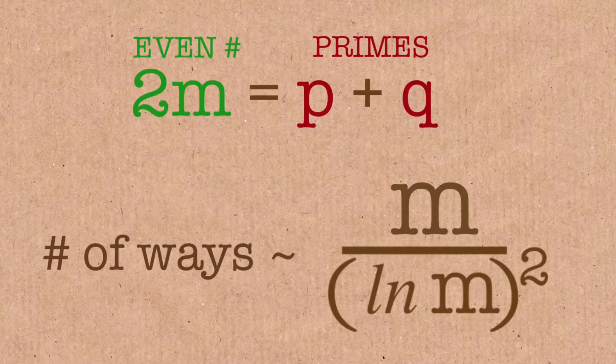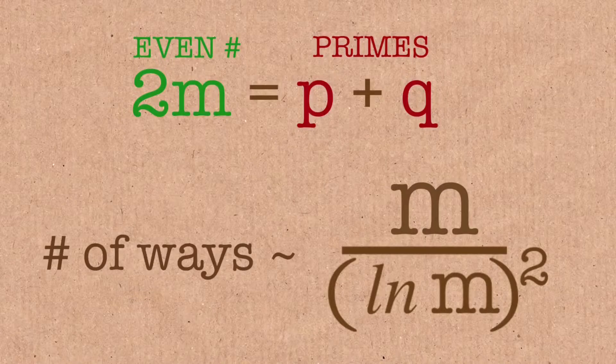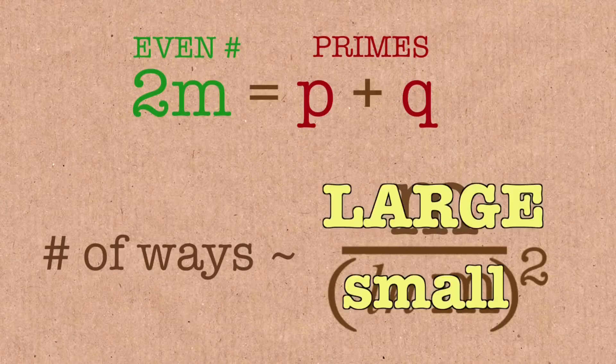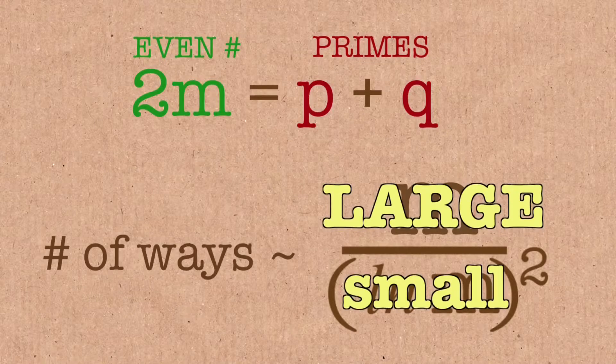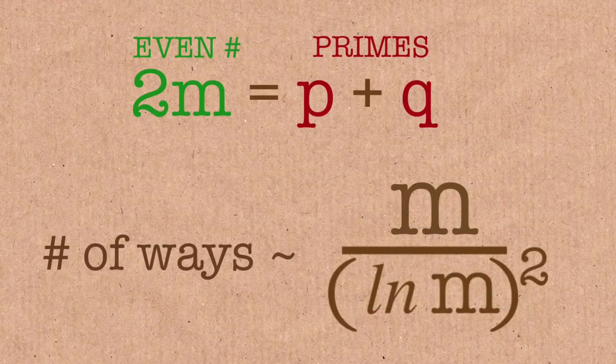m is a whole lot bigger than the log of m. Think of base 10, think m is a million and the log of m is 6. So, you know, this is like a million over 36. And if it's a billion or 10 to the 12th, let's say, then m would be 10 to the 12th and this would be 12. So 10 to the 12th over 144. In other words, this is pretty close to m actually. So it's an enormously large number.